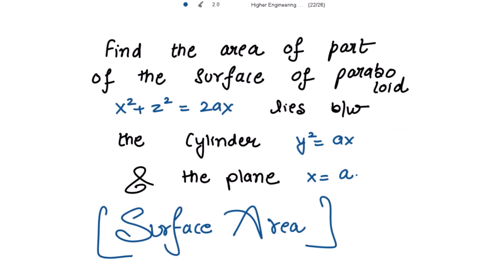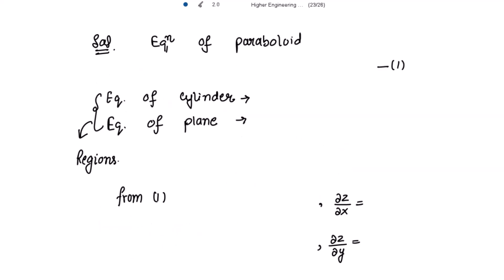We need to find the area of the part of the surface of the paraboloid y² + z² = 2ax, lying between the cylinder y² = ax and the plane x = a. The regions are the cylinder and the plane.